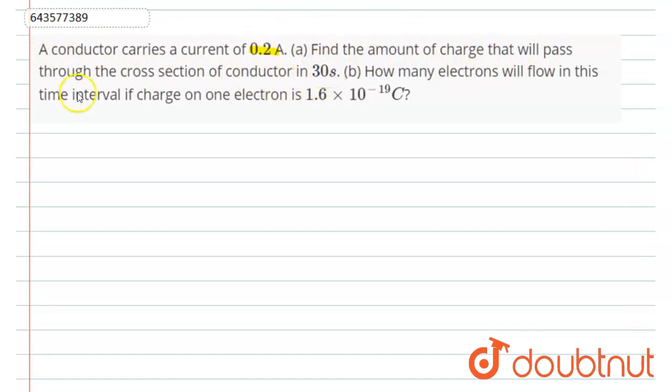First, part A: find the amount of charge that will pass through the cross section of conductor in 30 seconds. See friend, here the current flow is 0.2 ampere and time given is 30 seconds. Now what we know is that charge equals to current into time.